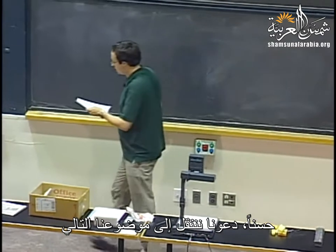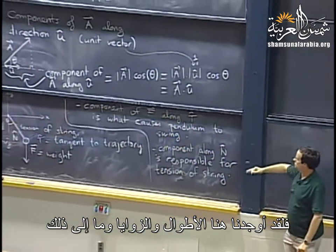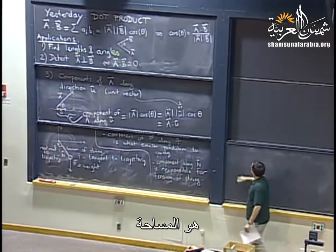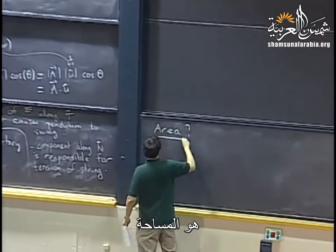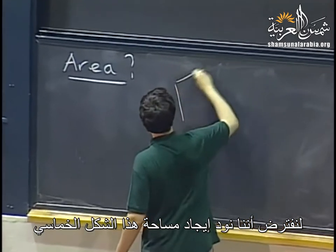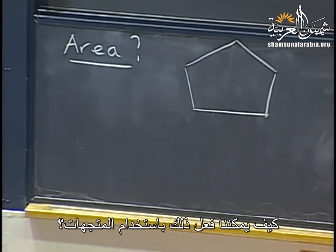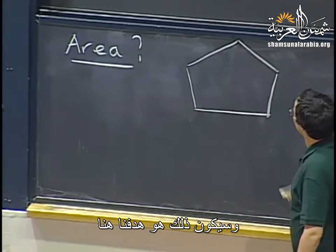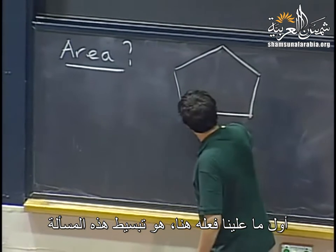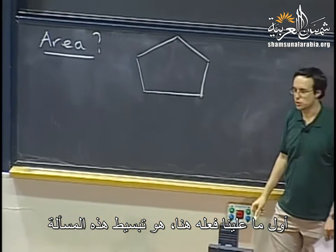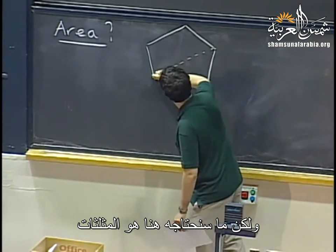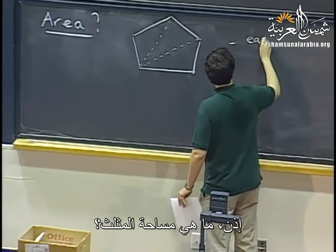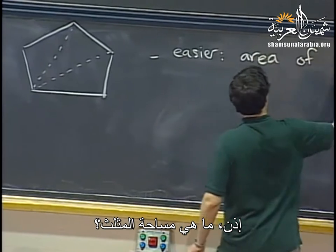Let's move on to our next topic. We have found things about length, angles, and related concepts. One important concept we haven't addressed in terms of vectors is area. Let's say we want to find the area of a pentagon using vectors. We can simplify the problem — we don't need to bother with pentagons. All we need to handle are triangles, because we can cut the pentagon into three triangles and sum their areas.